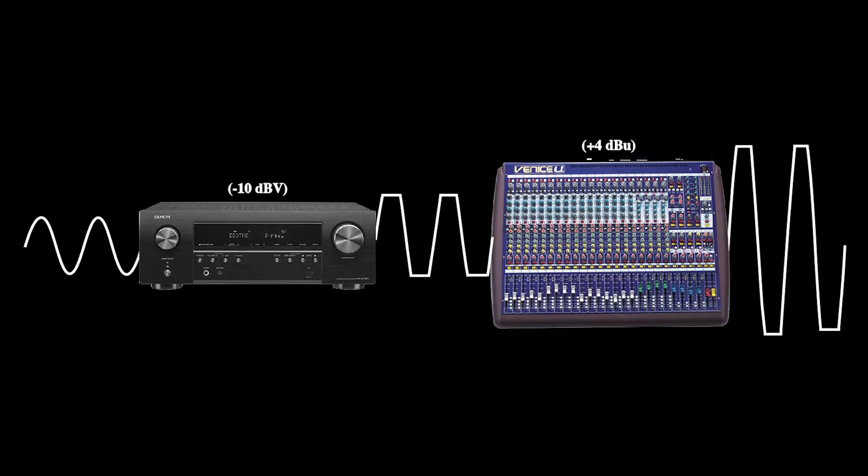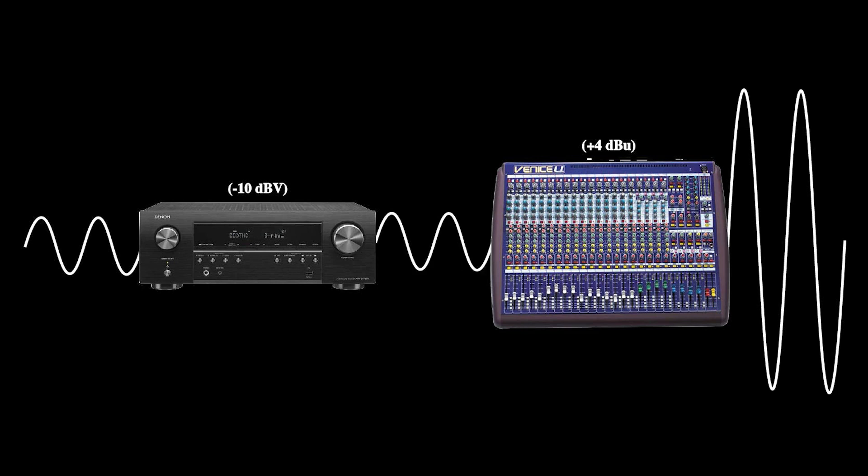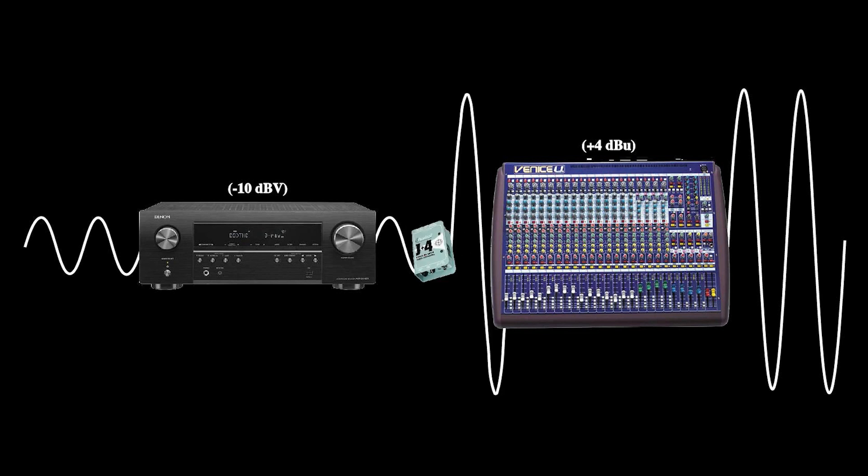When sending a signal from a consumer device to a professional device, you can't increase the output of the consumer device without causing clipping. Instead, add gain to the signal at the input of the professional device, or use an inline signal level driver like the Radial J+4. But remember, when you increase the level of the signal, you're also increasing the level of the noise floor beneath that signal.